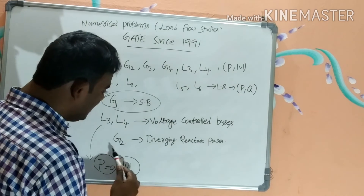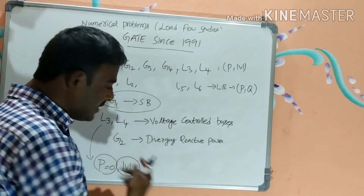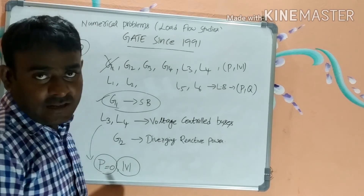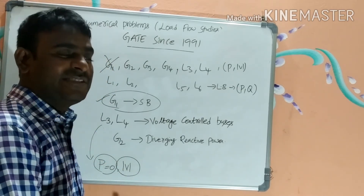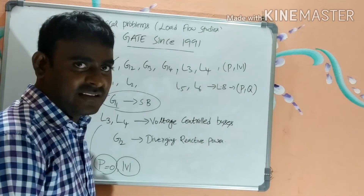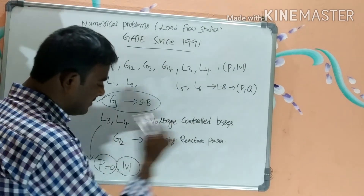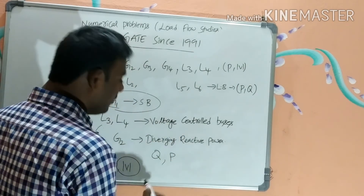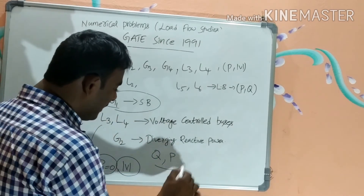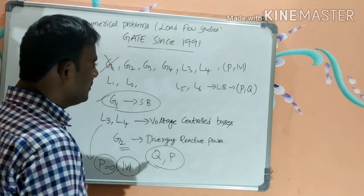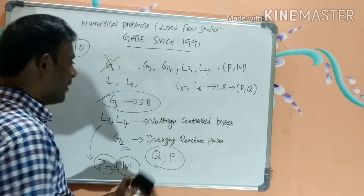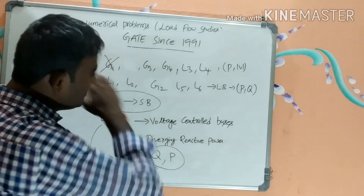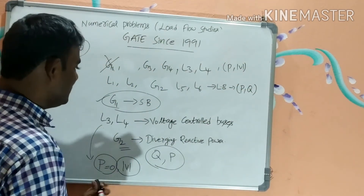Generator G2 cannot supply reactive power within its limits — it is generating beyond its maximum limit. So the reactive power of G2 is fixed at the maximum limit, and with P already known, both P and Q are now specified for G2. Hence G2 is reclassified as a PQ bus, removed from the PV group.